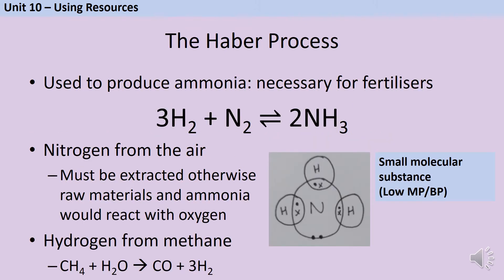The Haber process is an industrial chemical process that was developed by Fritz Haber in the early part of the 20th century as a way of making ammonia — this molecule NH3. Ammonia is really important because it's the main component of most of the fertilisers that farmers use on their crops to make sure we can grow enough food to feed everybody, and so Haber actually won the Nobel Prize for his work to develop this process.